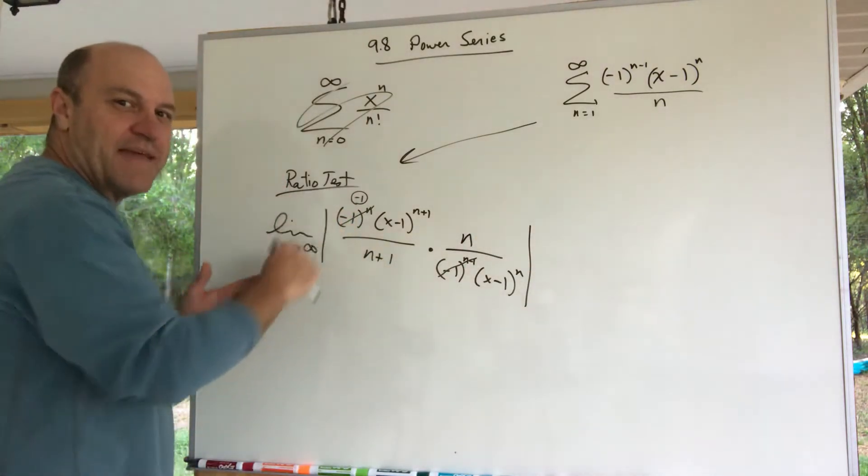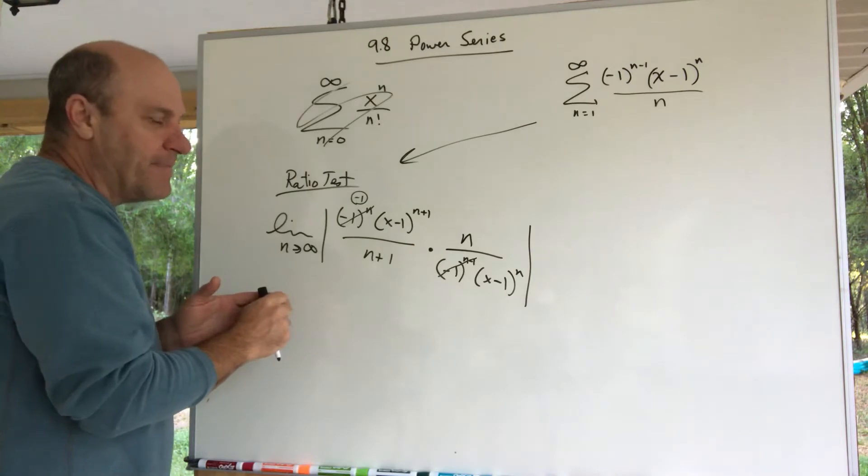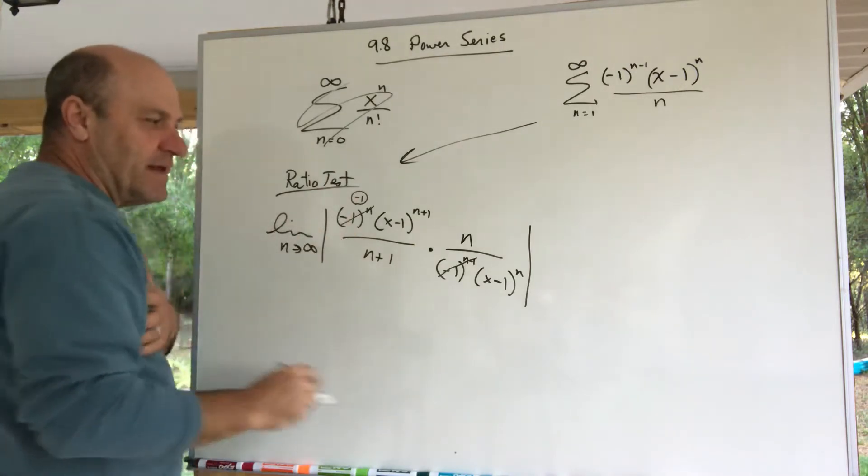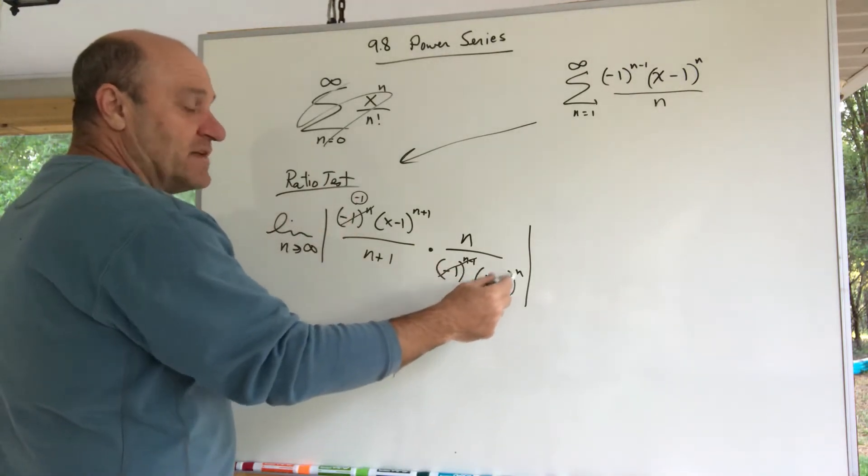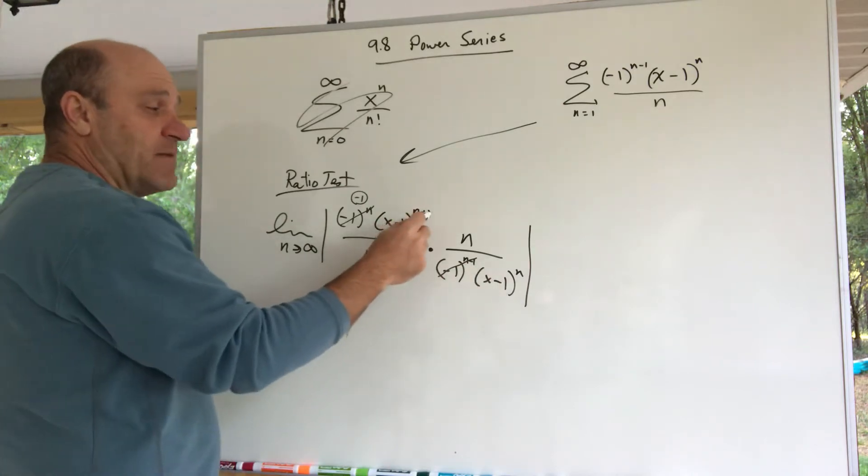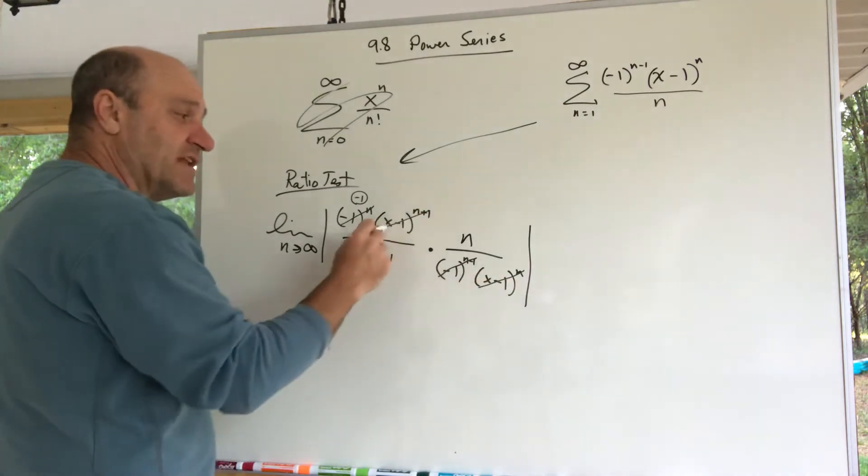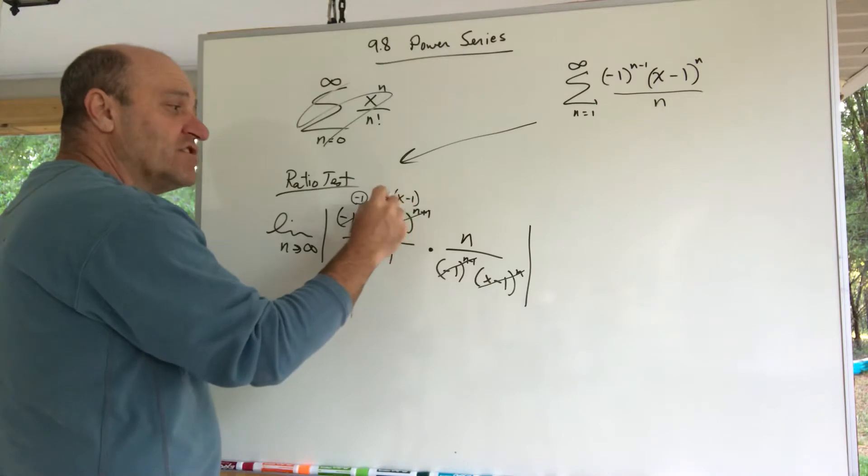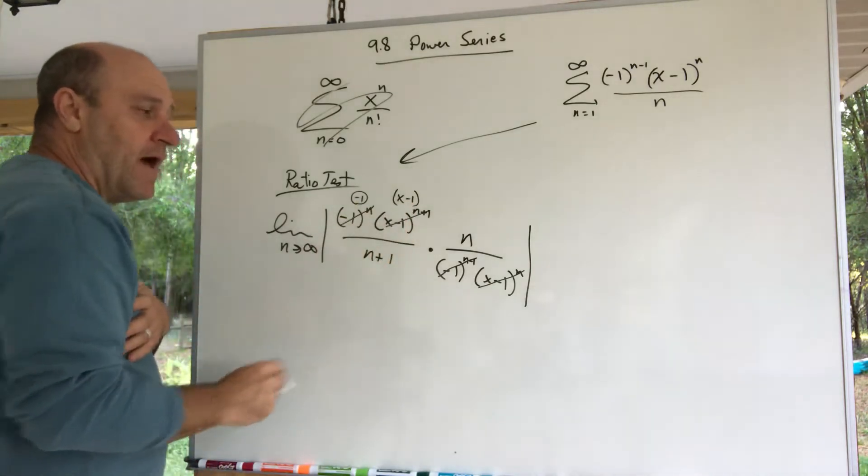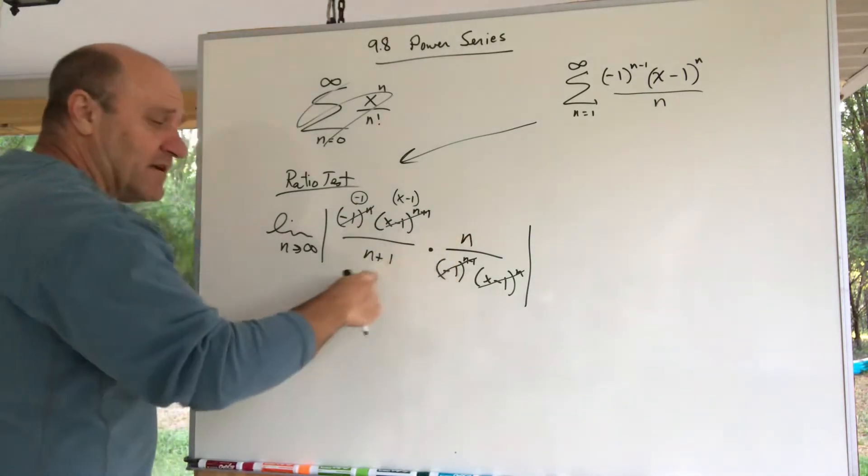What about this x minus 1 to the n, x minus 1 to the n plus 1? I can cancel those. It leaves me an x minus 1 to the first. That's about all I can do. I can't do any canceling there.